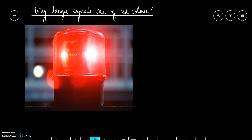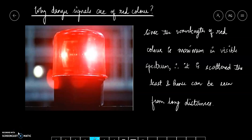We must have seen that there are red color danger signals. Danger signals are always in red color, but why? Since the wavelength of red color is maximum in visible spectrum, and visible spectrum is what our eye can perceive, and among them red color has maximum wavelength, therefore it is scattered the least and hence it can be seen from long distances. If there is fog in that area but there is danger ahead, then if danger signals are blue color, the fog will scatter them and they can't be seen from long distances.